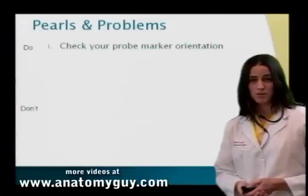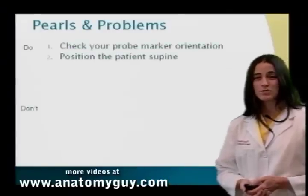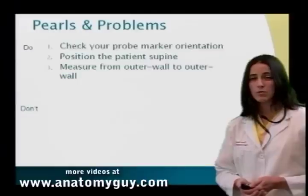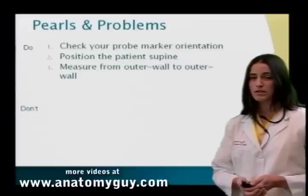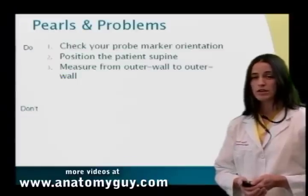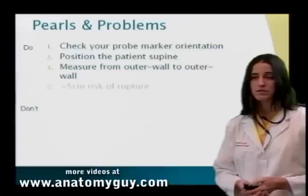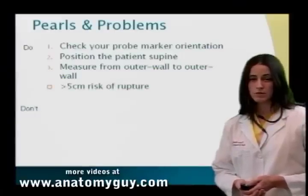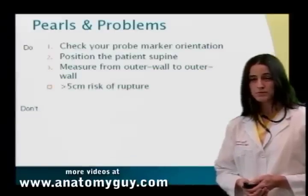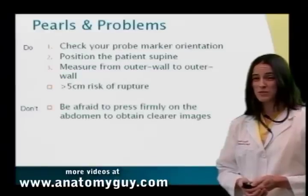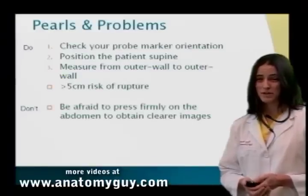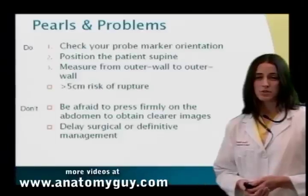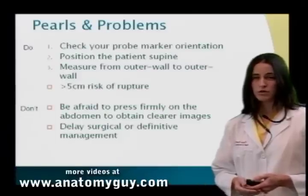When scanning for a AAA, remember to check your probe marker orientation, position the patient supine, and measure from the outer wall to the outer wall. This can be tricky since the lumen can appear to be an outer wall — remember to check and look for the outer wall of the thrombus. Any AAA greater than five centimeters carries a high risk of rupture. Don't be afraid to press firmly on the abdomen to obtain a clear image, and don't delay surgical or definitive management if you're having indeterminate ultrasounds.